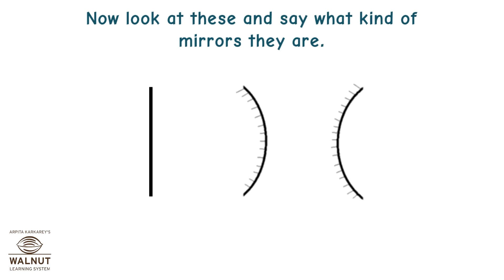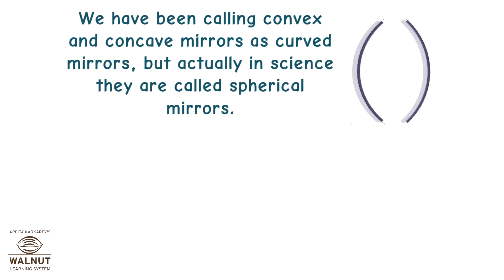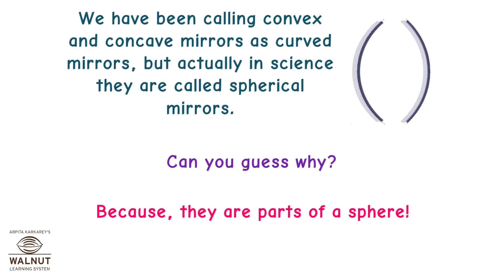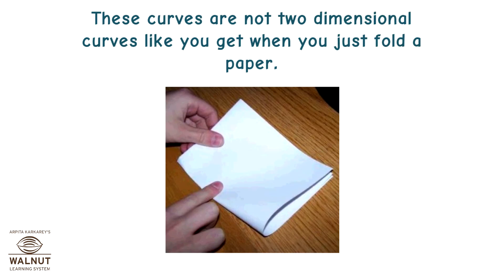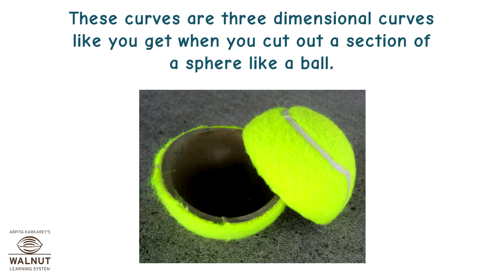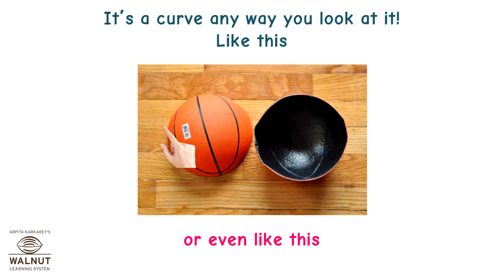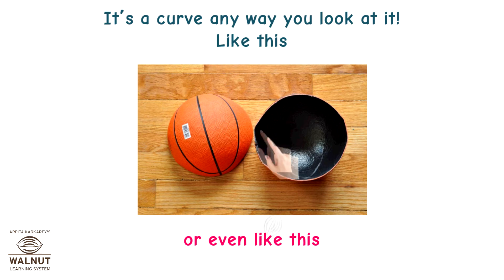Now look at these and say what kind of mirrors they are. We have been calling convex and concave mirrors as curved mirrors, but actually in science they are called spherical mirrors. Can you guess why? Because they are parts of a sphere. These curves are not two-dimensional curves like you get when you fold a paper. These curves are three-dimensional, like you get when you cut a section of a sphere like a ball — it's a curve any way you look at it.